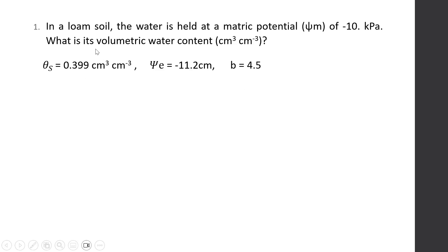Number 1. In a loam soil, the water is held at a matrix potential of minus 10 kPa. What is its volumetric water content? We have here given values for the saturated water content, 0.399 cubic centimeter per cubic centimeter. The air entry potential is minus 11.2 centimeter. B is 4.5.